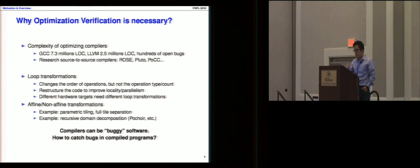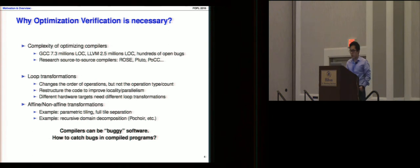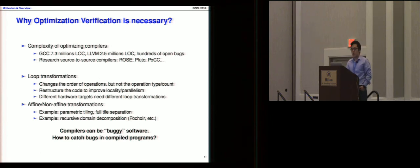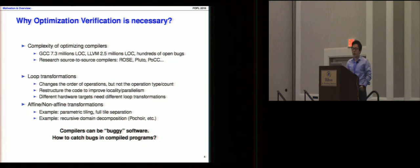An important optimization is loop transformation. For example, parametric tiling decomposes the program into different blocks where the tile size is determined at runtime. Recursive decomposition is also a non-affine transformation. These optimizing compiler machineries are complex, so how do we make sure the transformed program is correct? The transformed program can have thousands of lines of code, making it very hard to debug or check by hand.